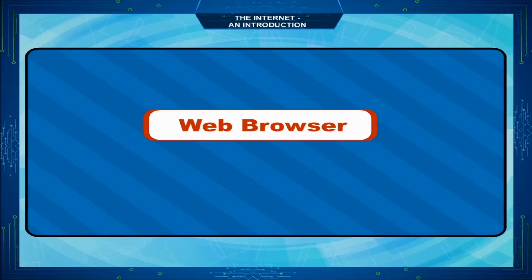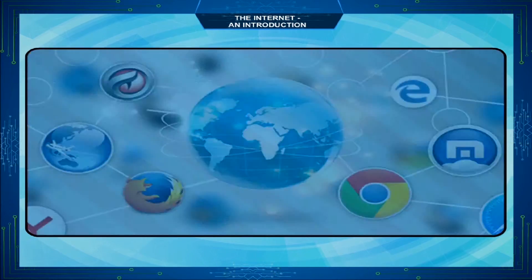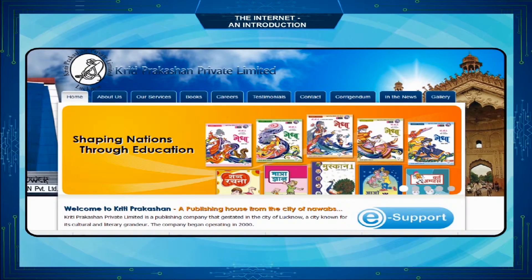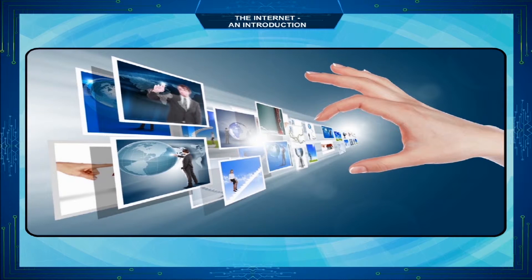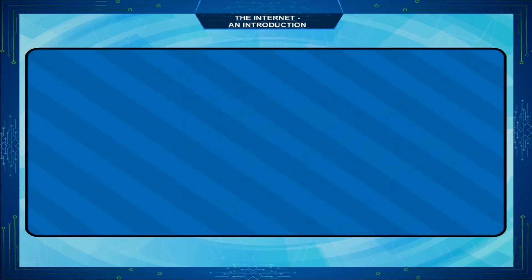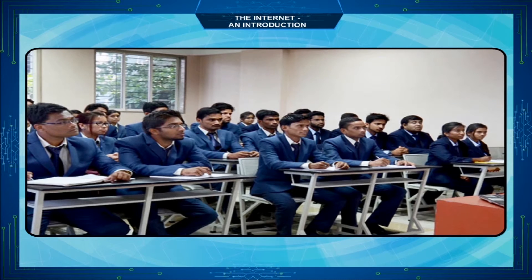Web Browser: It is a software that allows you to view and explore information on the web. Website: It is a collection of web pages containing information related to a particular company, topic, institute, etc.